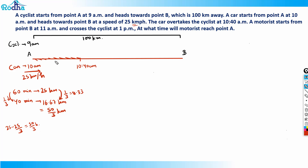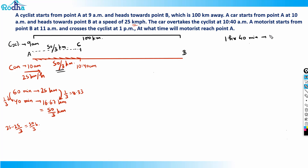Since the car overtakes the cyclist at 10:40 am, the cyclist is also at the same point. So the cyclist has also moved a distance of 50/3 kilometers. The cyclist started at 9 am, so from 9 am to 10:40 am is one hour and 40 minutes — the cyclist has covered 50/3 kilometers in that time.